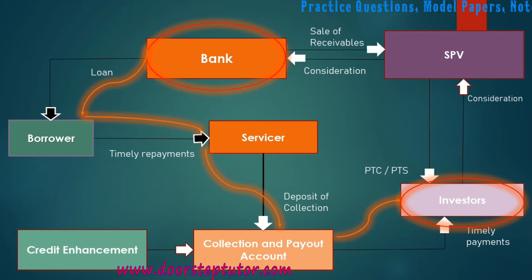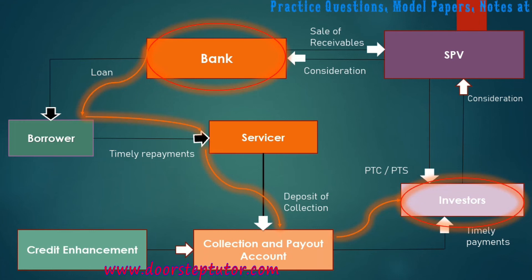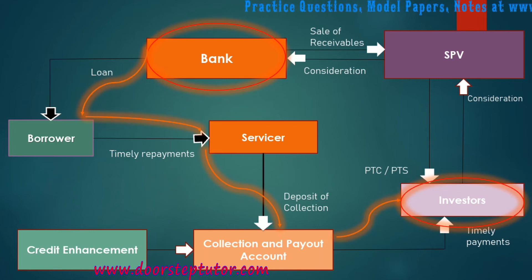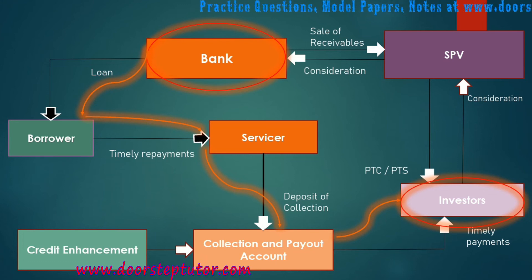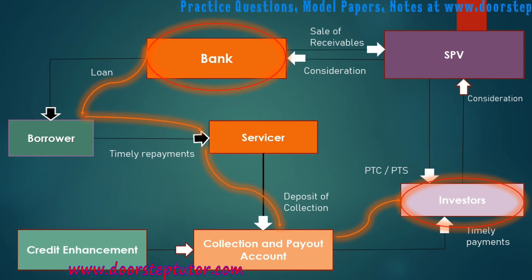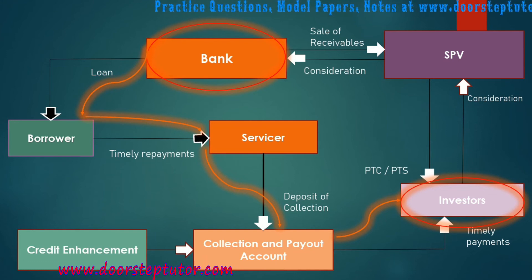The assets held by the bank are used in the process of securitization — held as securities to the SPV and indirectly to the investors — and they earn money. That is why it is named asset securitization. The SPV sells those instruments to investors through PTC and PTS.